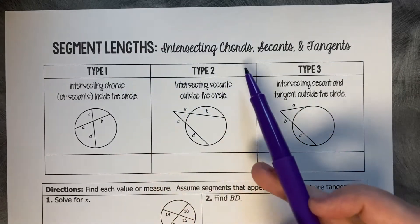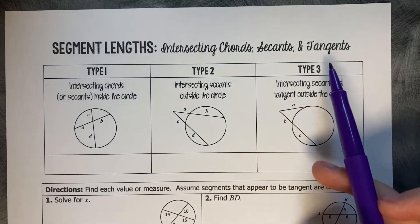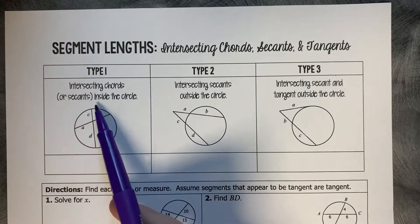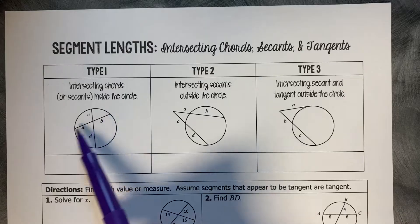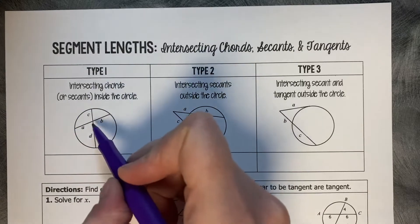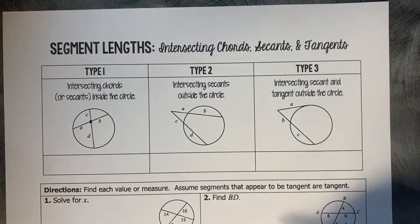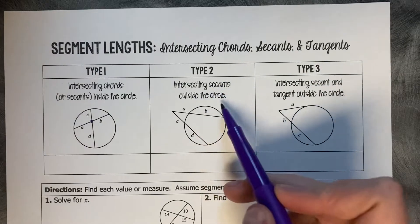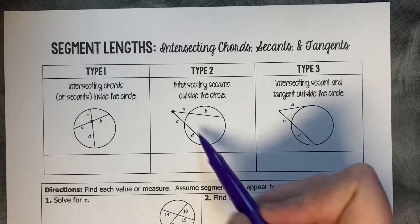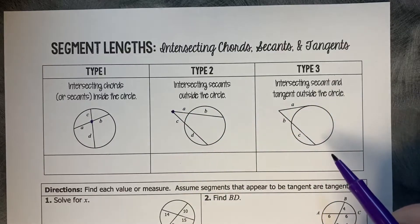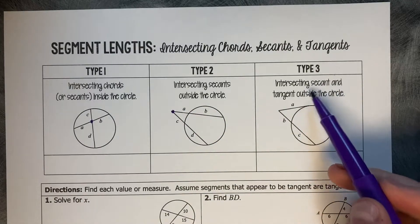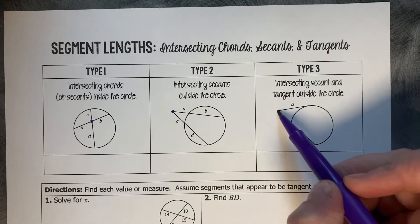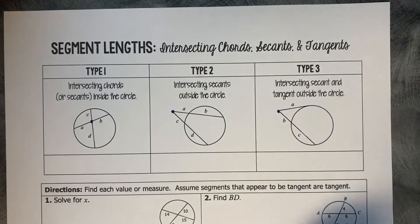Segment links: intersecting chords, secants, and tangents. Type 1: intersecting chords inside the circle, so the intersection lands within the circle. Type 2: intersecting secants outside the circle, so an exterior two secants. And type 3 is an intersecting secant and tangent outside the circle, so one length is a tangent and one length is a secant.